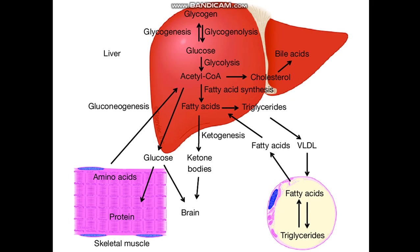The liver is the main site for metabolic activities. Adipose tissue and skeletal muscle also participate. Glycogenesis or glycogenolysis occurs in the liver — either synthesis or breakdown of glycogen — which is then converted to glucose. Glucose enters glycolysis, producing acetyl-CoA, which may go to cholesterol synthesis, bile acids, or fatty acid synthesis, leading to triglycerides excreted as VLDL, which is deposited in adipose tissue.